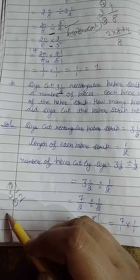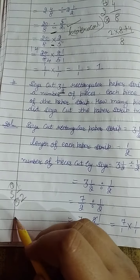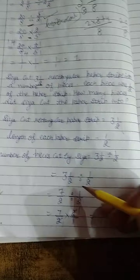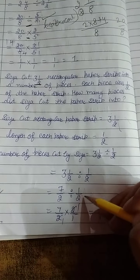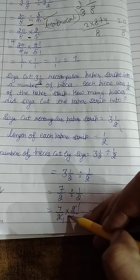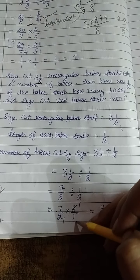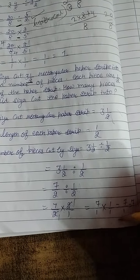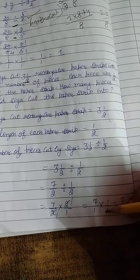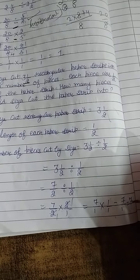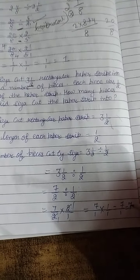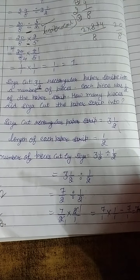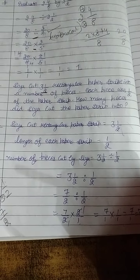Number of pieces cut by Siya equals 3 and 1 over 2 divided by 1 over 2. Convert the mixed fraction: 3 times 2 plus 1 gives 7 over 2. Dividing by 1 over 2, change division to multiplication by the reciprocal 2 over 1. The 2s cancel, leaving 7 over 1, which is 7. Siya cut 7 pieces.